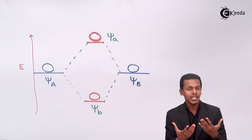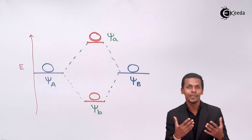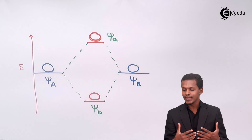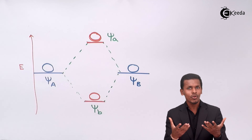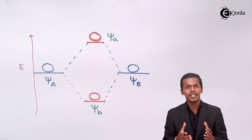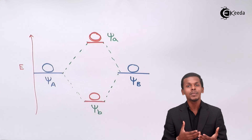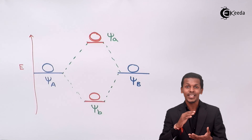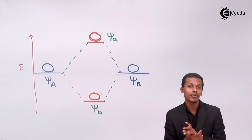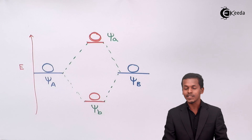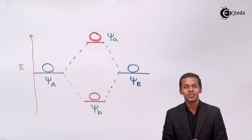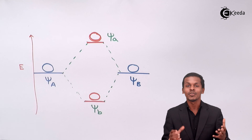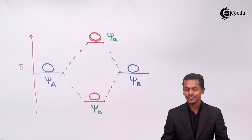So the LCAO method — linear combination of atomic orbitals — tells us that two atomic orbitals combine to form two molecular orbitals. The molecule's stability depends not only on having lesser energy, but also on the extent of overlapping between the orbitals. These are the key details regarding the formation of molecular orbitals during the combination of atomic orbitals.